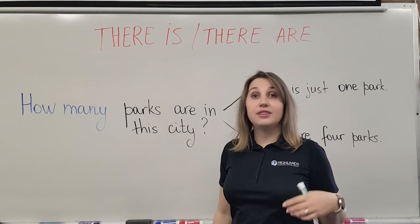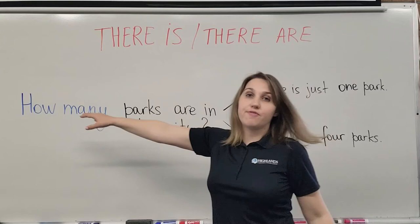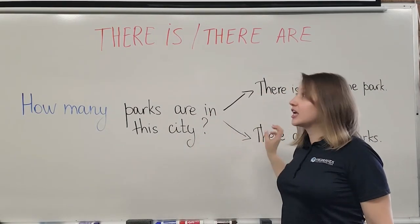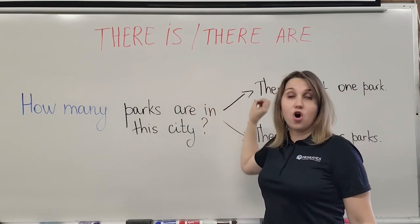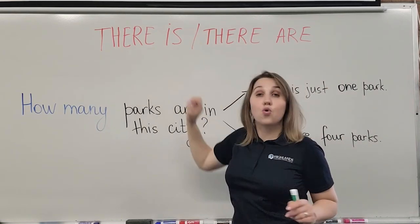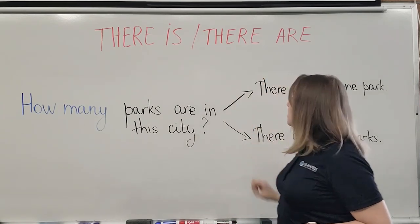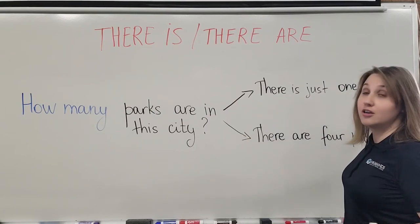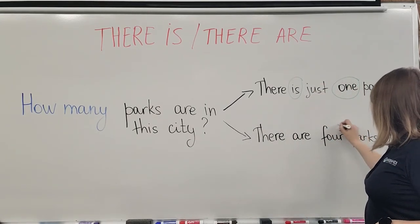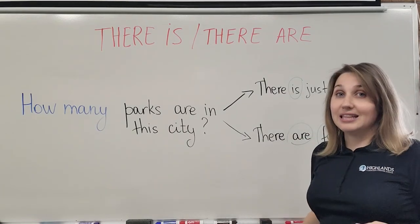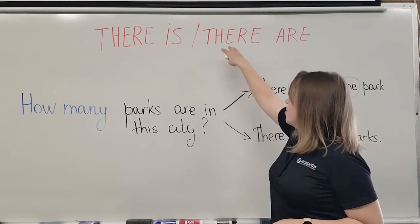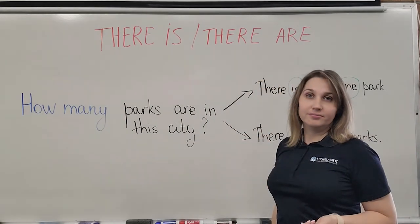There is another way to ask a question about a specific number: we use the phrase 'how many.' For example, 'How many parks are in this city?' The answer uses either 'there is' or 'there are.' It could be 'There is just one park' — singular, so we use 'is' — or 'There are four parks' — plural, so we use 'are.' The form of the answer depends on whether we are using the singular 'there is' or the plural 'there are'.